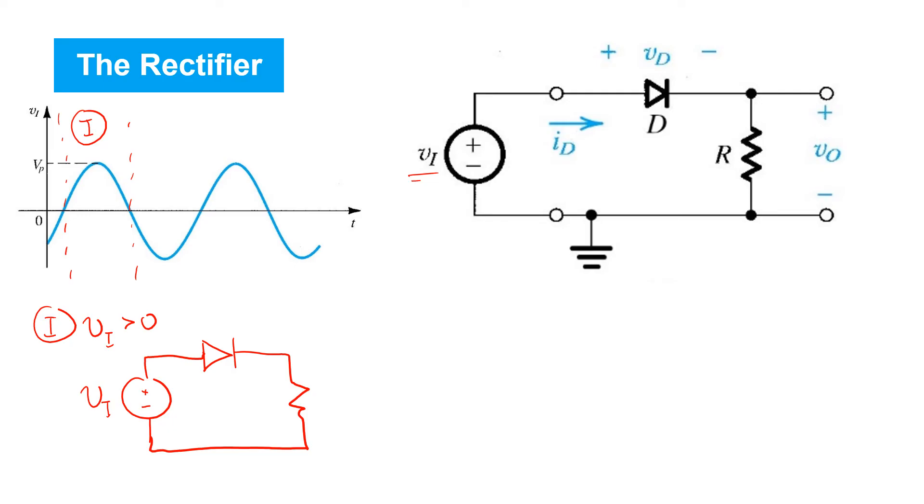As a result, the entire voltage vi appears across the resistor.